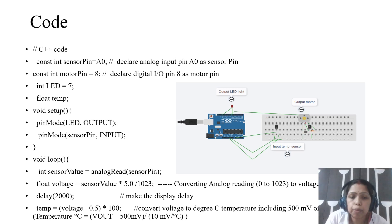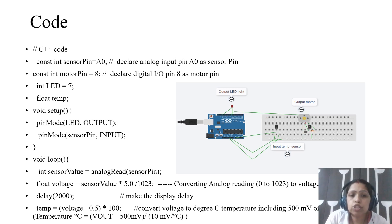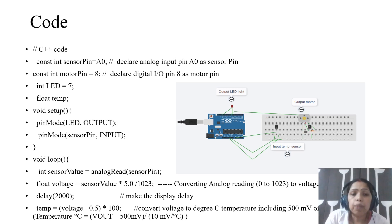The LED can be connected to one digital terminal. The motor can also be connected to a digital terminal. But the temperature data will be connected to the analog terminal — there are analog pins in the Arduino, as I discussed in the previous lecture. The sensor pin is stored as a variable, motor pin is 8 (digital), LED is connected to digital pin 7.